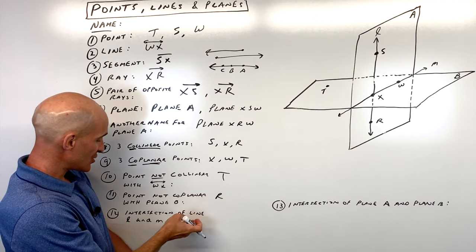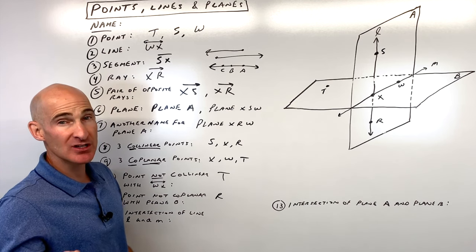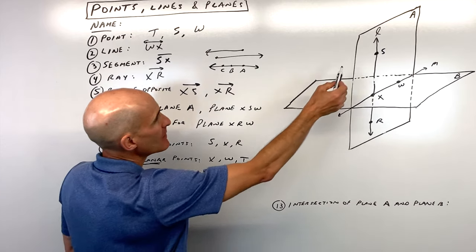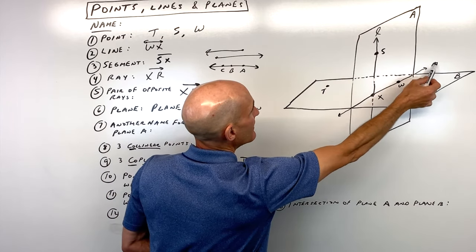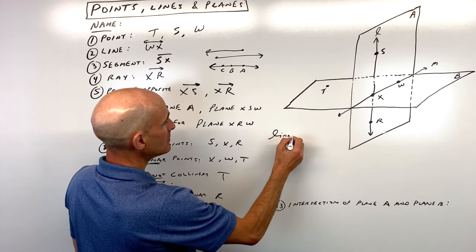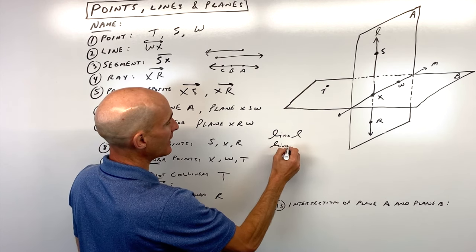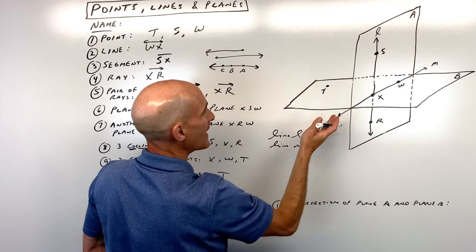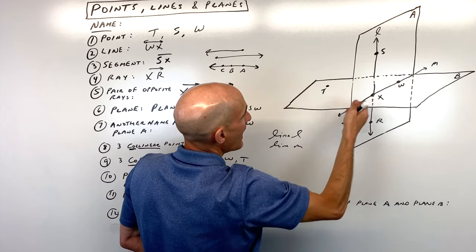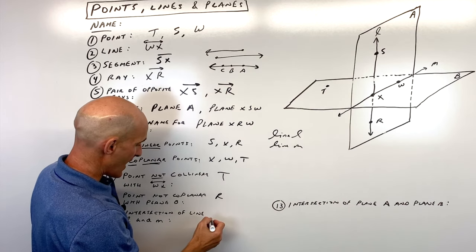And then we want to find the intersection of line L and M. Now, we didn't talk about this earlier when we were talking about lines, but another way that they sometimes label lines is with a little cursive letter at the end of the line. So you could call this line L, or you could say line M for this line. But the intersection of line L and M, where do they cross? At point X.